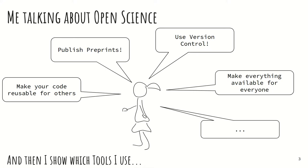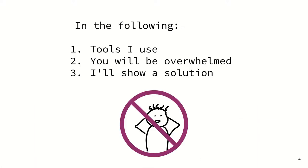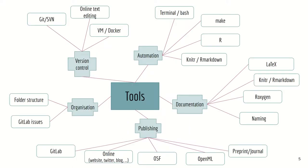But then I start showing which tools I use and it gets technical really quickly. In the following, I will be showing you which tools I use. You might be a bit overwhelmed with all the technical stuff that I'm using to do open and reproducible research. And then I'll show you a solution that I think is a great solution for this situation where researchers are overwhelmed with how to do open science and reproducibility in a smart way.